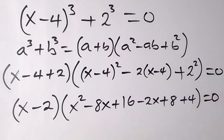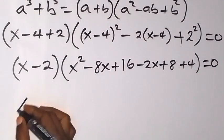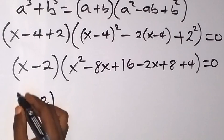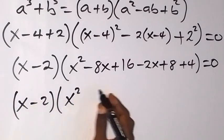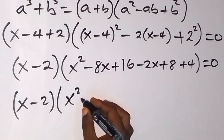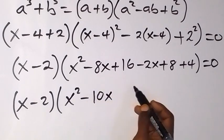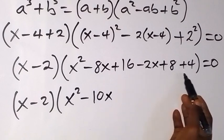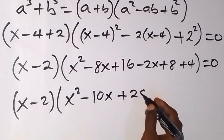Collecting like terms inside the second bracket: minus 8x minus 2x gives minus 10x, and 16 plus 8 plus 4 gives 28. So we have (x minus 2) times (x squared minus 10x plus 28) equals zero.